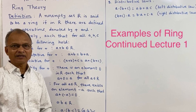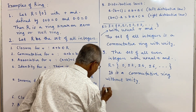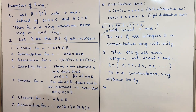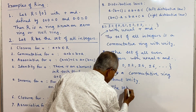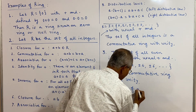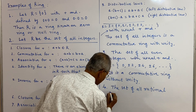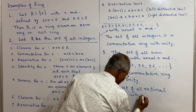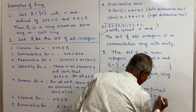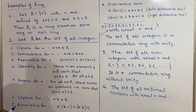Continuing from lecture 1 on definition and examples of rings, in this lecture we shall discuss some more examples of rings. We consider the set of all rational numbers with usual addition and multiplication, and examine whether it forms a ring or not.